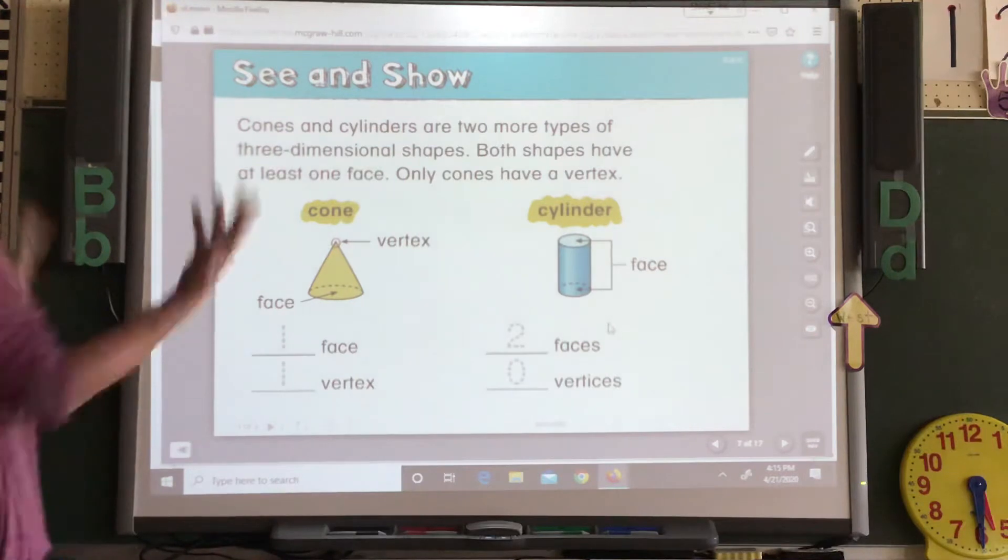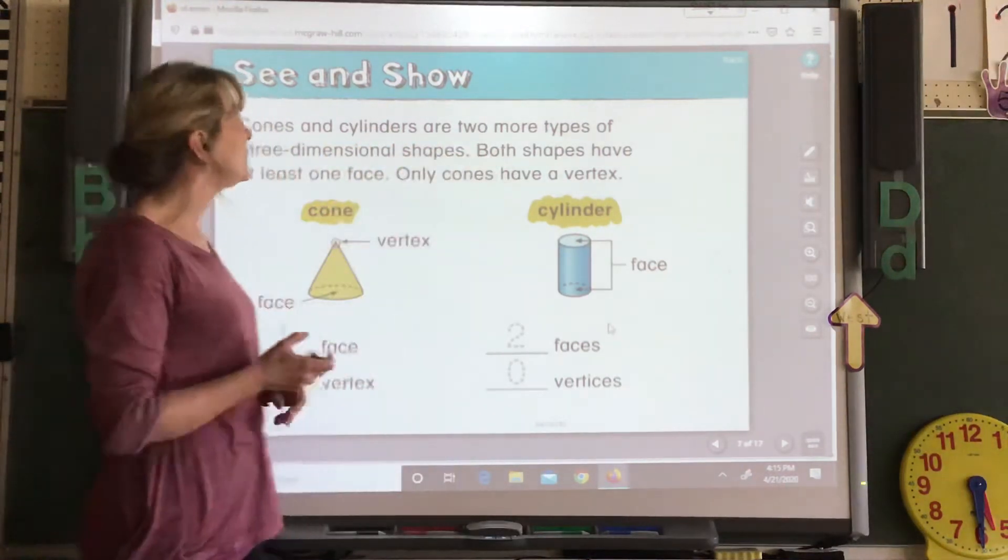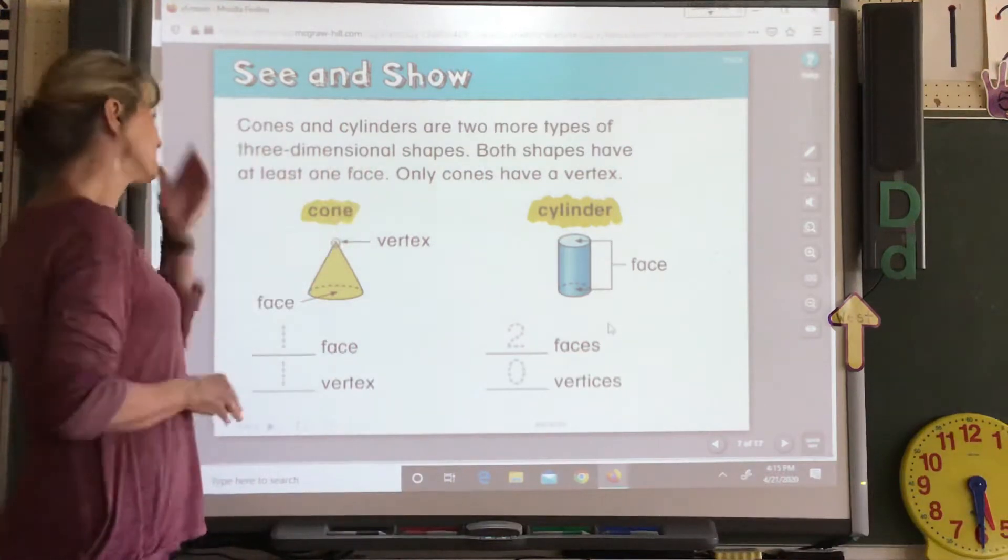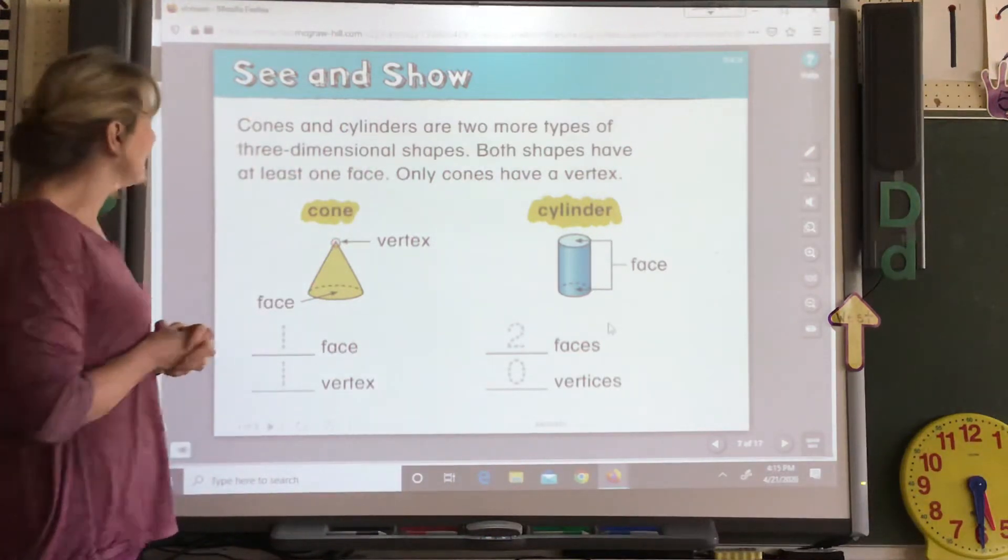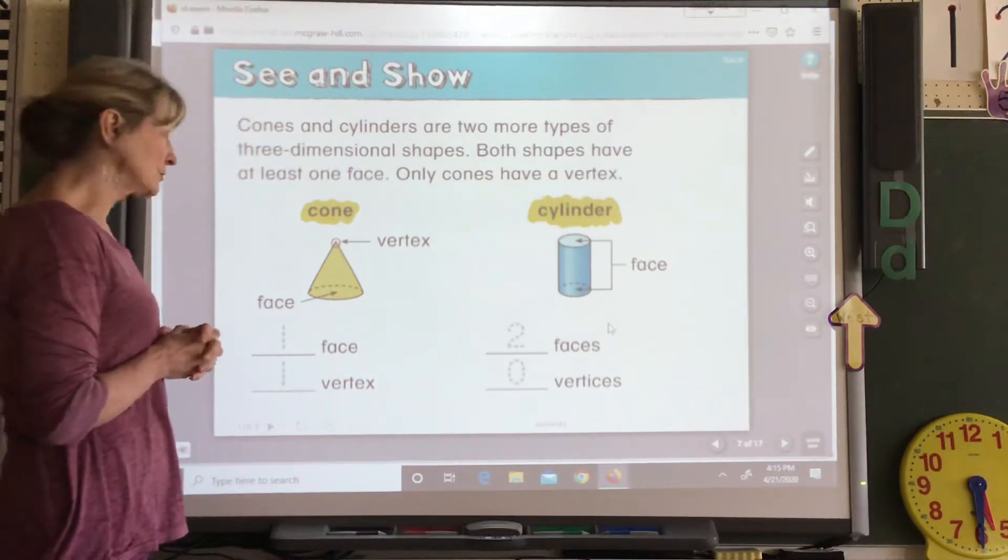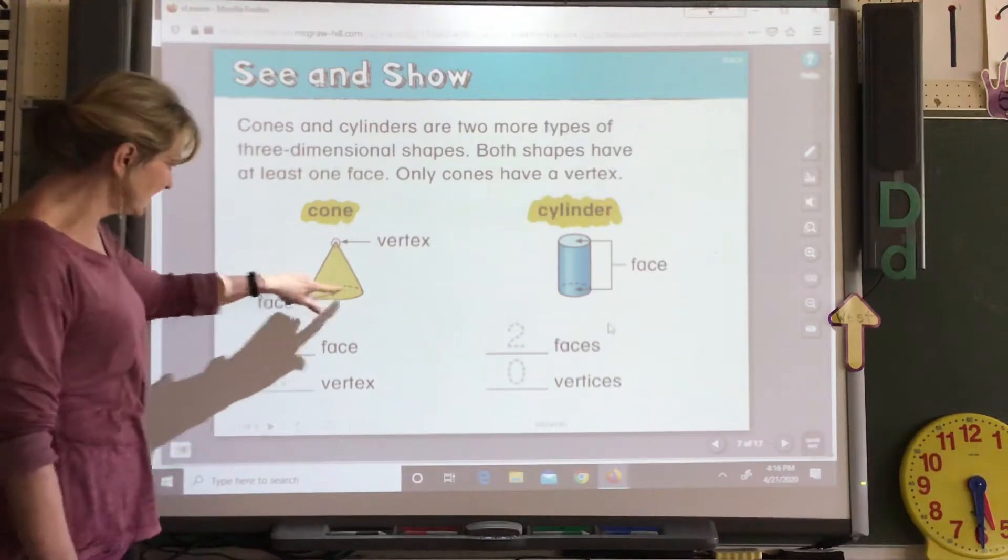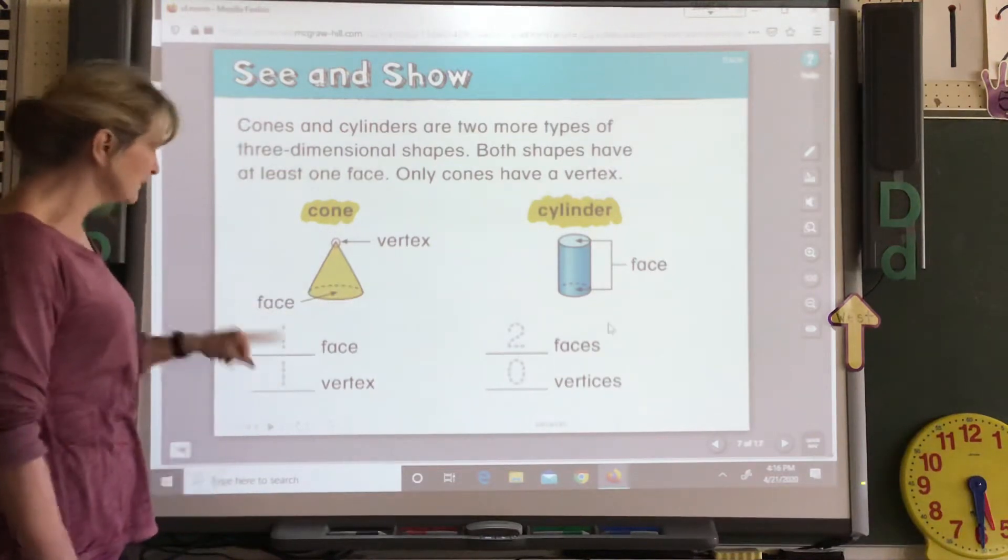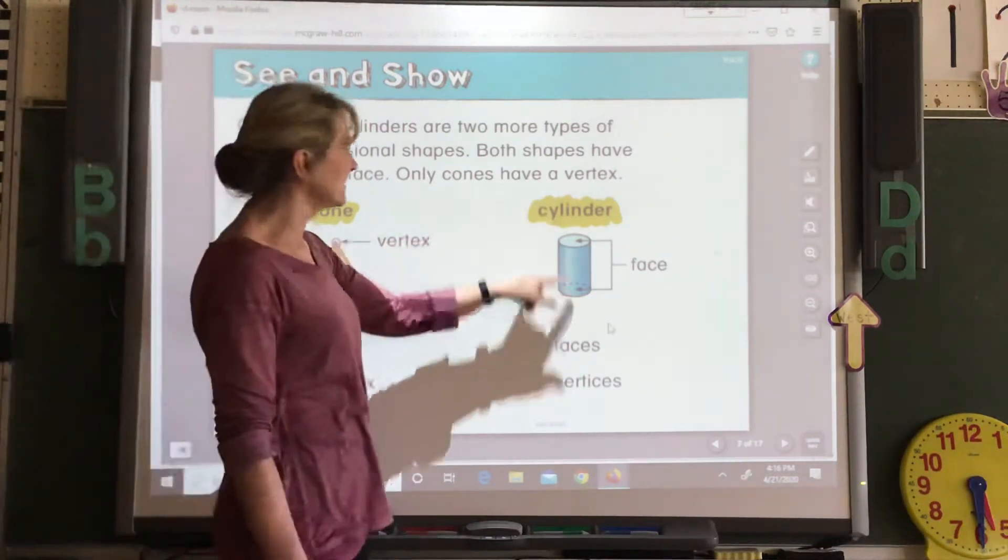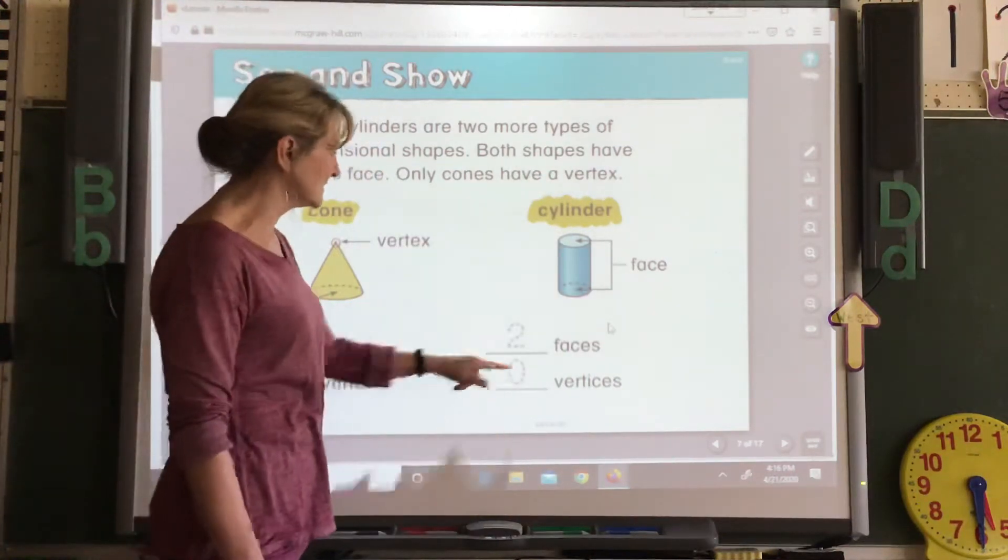And it just tells what we talked about. Cones and cylinders are two more types of three-dimensional shapes. Both shapes have at least one face. Only cones have a vertex. So it shows you the vertex. Here's the face on the bottom. One face, one vertex. Here's a cylinder. Face on top, face on bottom. Two faces, zero vertices.